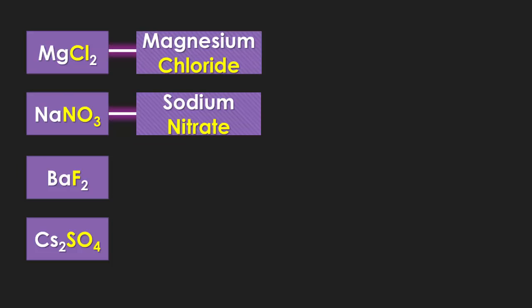So looking at the next two examples, because it's binary, it's going to end in the -ide ending. So fluorine turns into fluoride. The next example is a polyatomic ion, so you're going to leave the name alone. So it's going to be cesium sulfate.